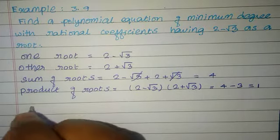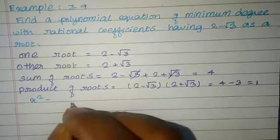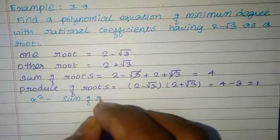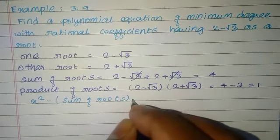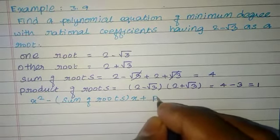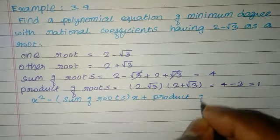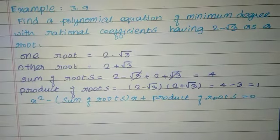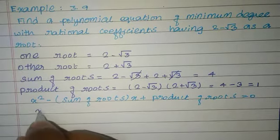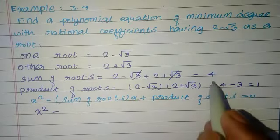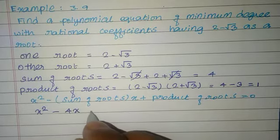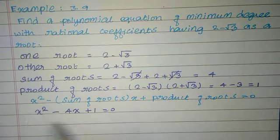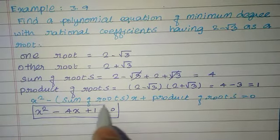So the required equation is x squared minus (sum of roots)x plus (product of roots) equals 0, giving x squared minus 4x plus 1 equals 0. This is the required equation.